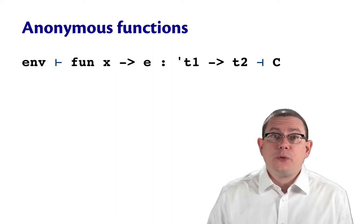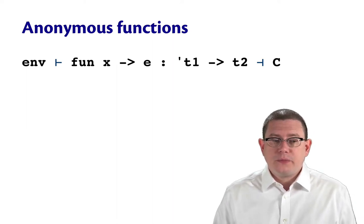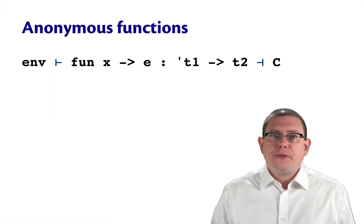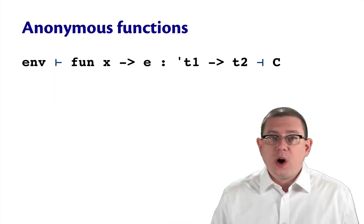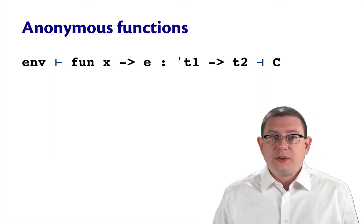Next, let's look at type inference for anonymous functions. Suppose we're inferring the type of the function x arrow e in environment n. That's going to have the type tau1 arrow t2 and generate a set of constraints.